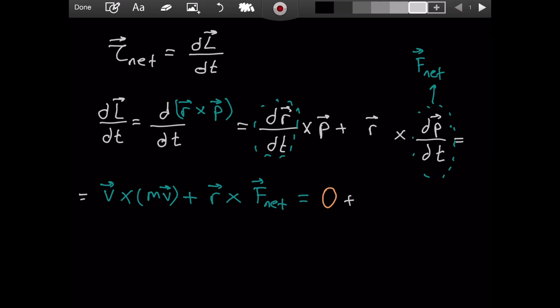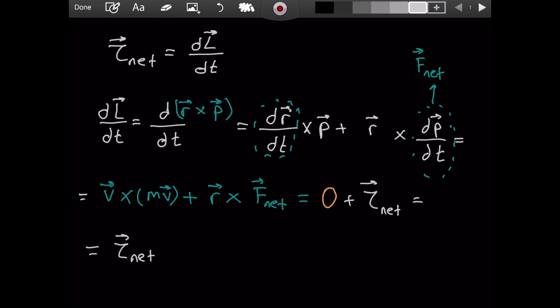And then plus we have r cross F_net. r cross F is, by definition, torque. And since we have the net force, we are going to get the net torque. Obviously zero plus the net torque will give us the net torque.